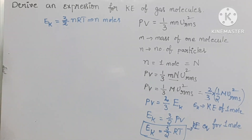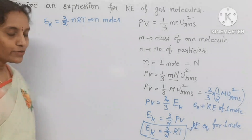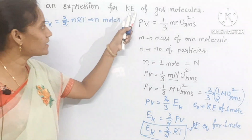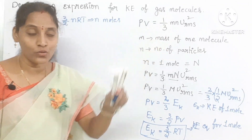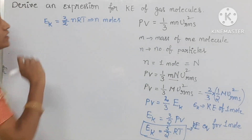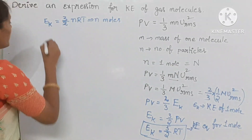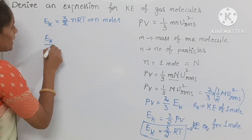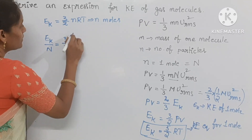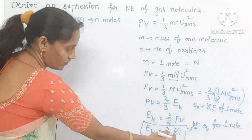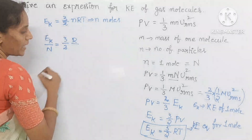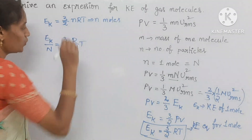And also I want the equation for 1 molecule. The question asks for the expression for kinetic energy of gas molecules. So for 1 molecule, you can write E_K upon capital N — dividing by Avogadro's number. In this equation you can write 3 by 2, R by capital N, into T.